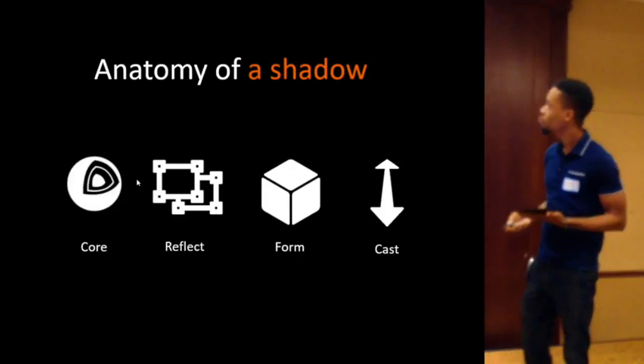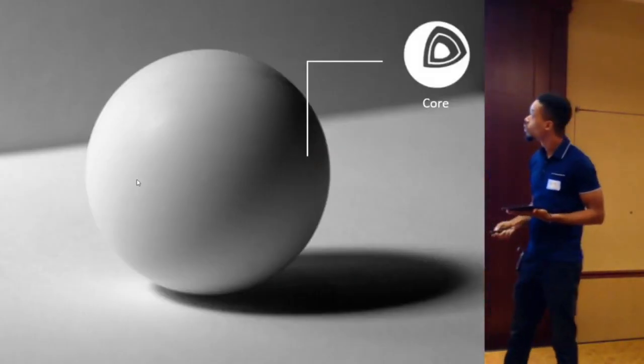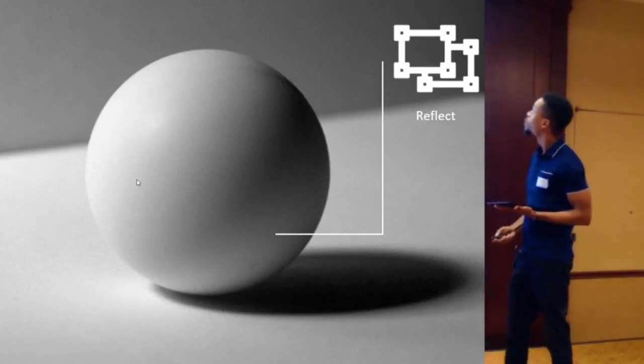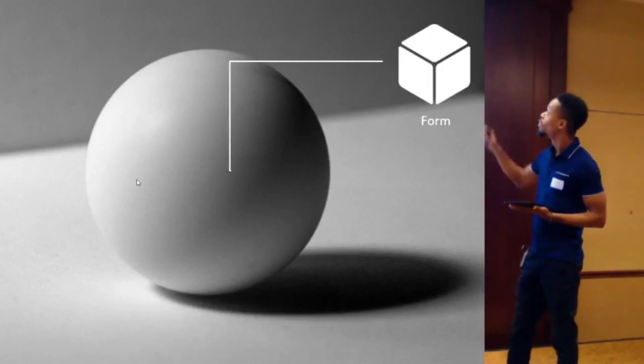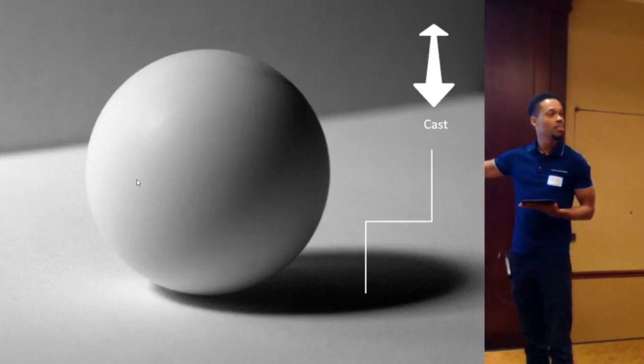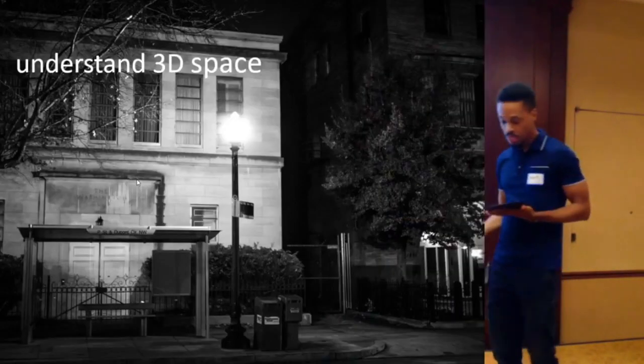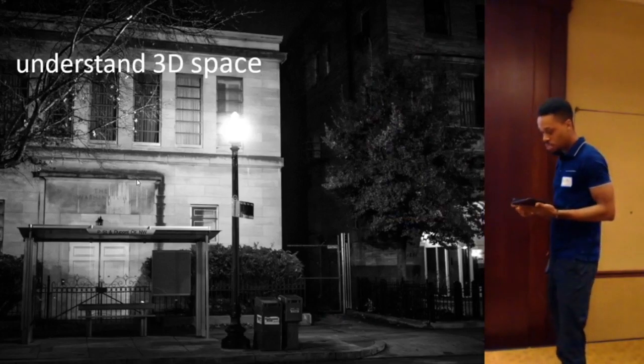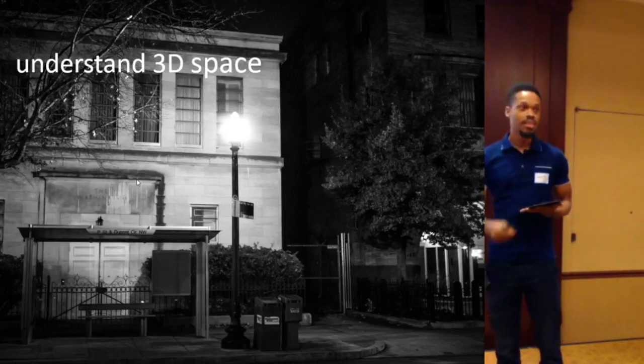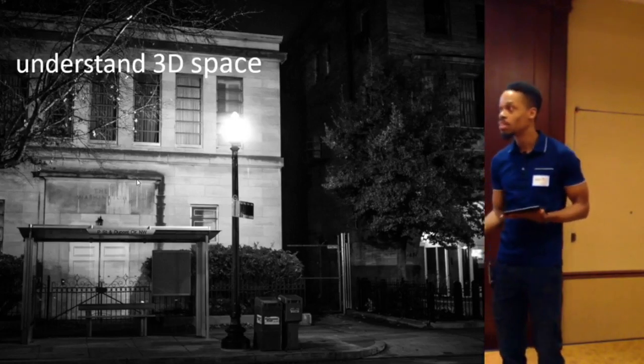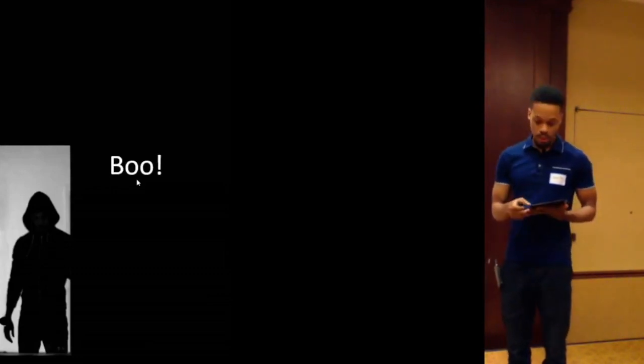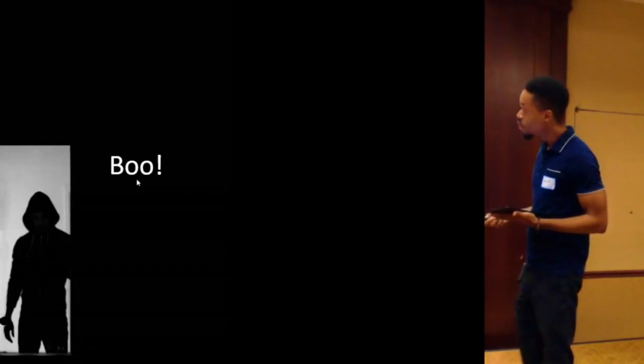For example, the core is basically the core aspect of the shadow. Then we have the reflective part, which is like a little bit of a shadow that's being reflected by the light. Then we have the form. This is the shadow that tells us the properties of the object. Then we have the cast shadow, and this helps us understand how tall something is or how the volume is being taken up in space. And all these things together help us to navigate the world in 3D, to make references about what we see. Is it farther? Is it closer? Is it hot? Is it cold? Is it tall? Is it heavy? Is it small? Is it spooky?